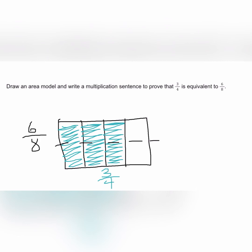So we now have six eighths and three fourths represented by this area model. Since six eighths takes up the same amount of shaded space as three fourths, we've proved with this area model that six eighths and three fourths are equivalent.